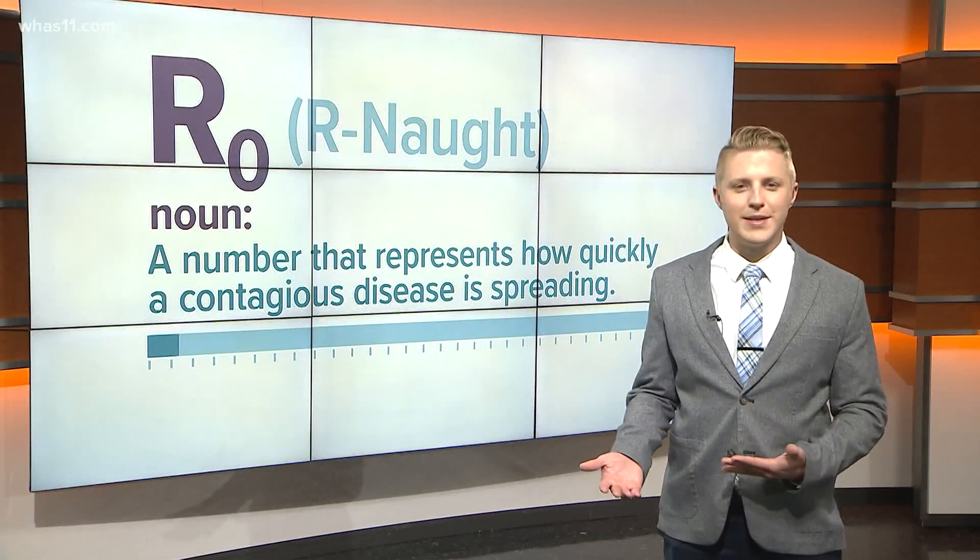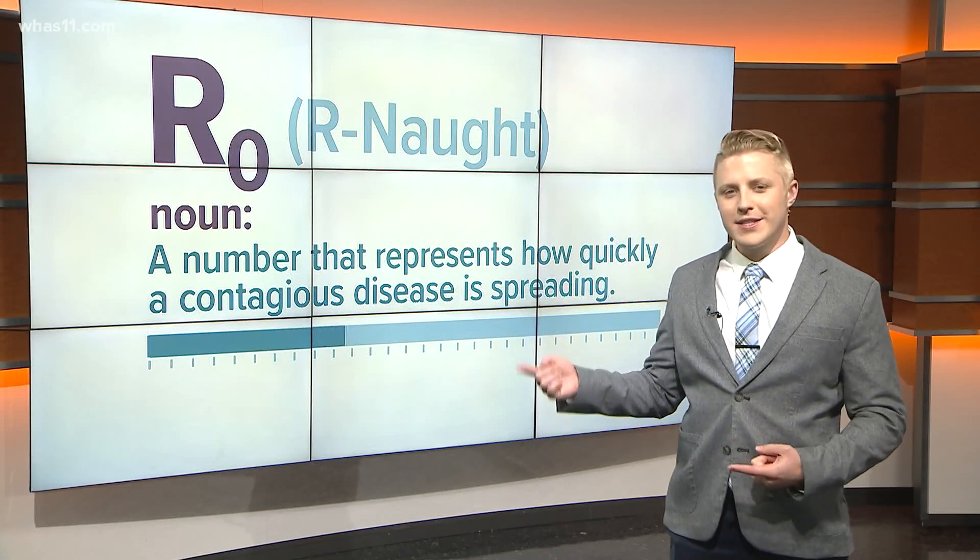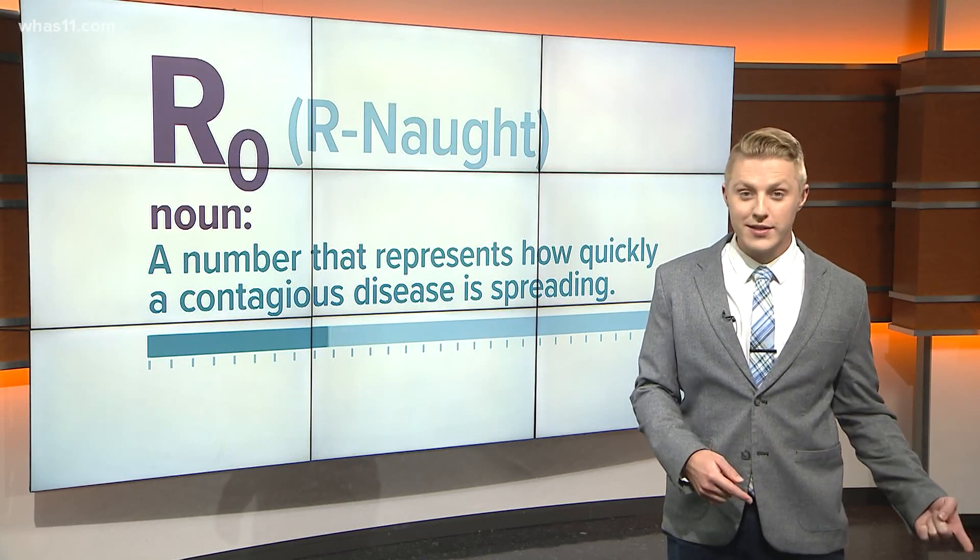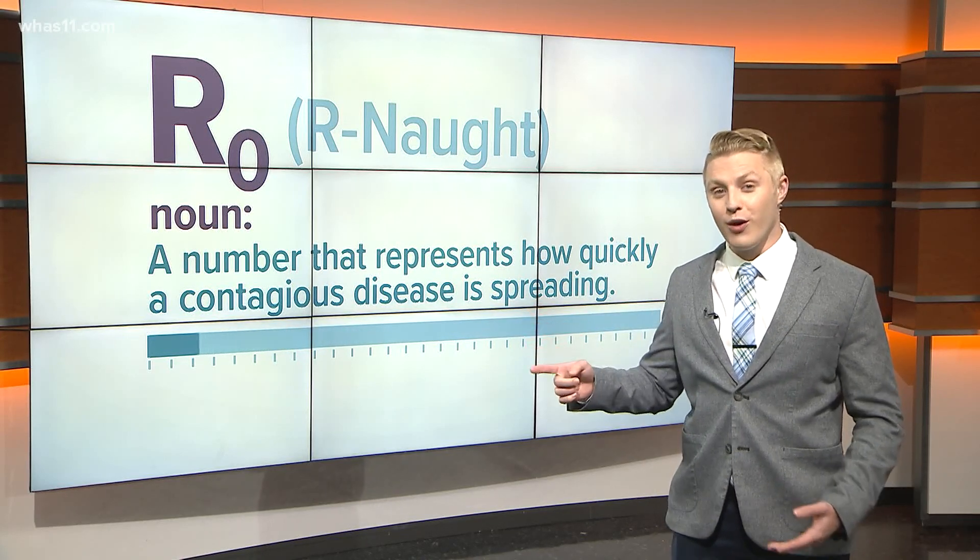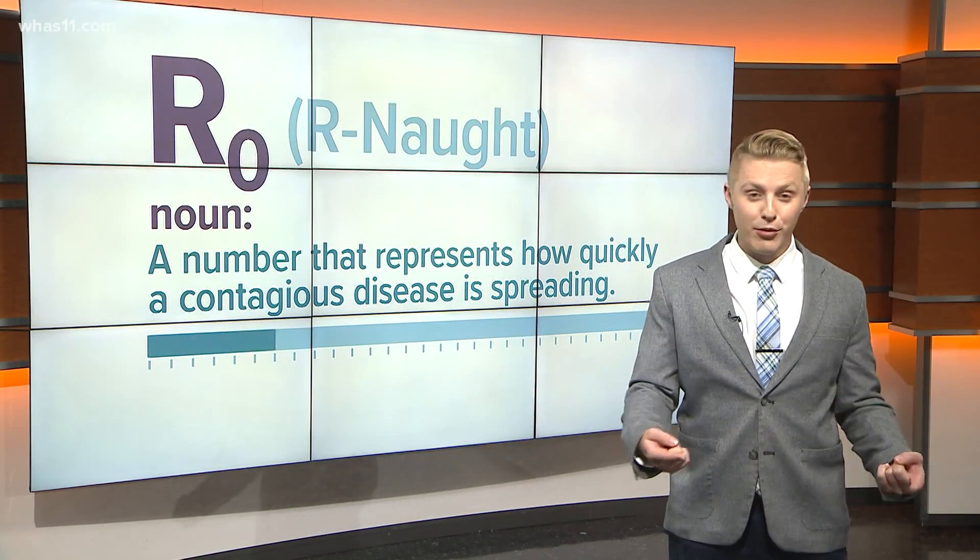Yeah, so Kristen, if you got the science deep dive last week, you heard me use the word R-naught. It's the number scientists use to represent how quickly a contagious disease spreads, and understanding the R-naught can help us explain how one case of a disease on the other side of the world can become a global pandemic.